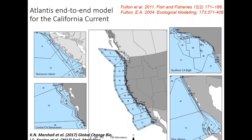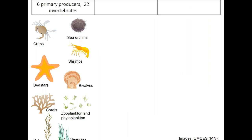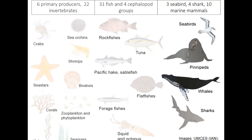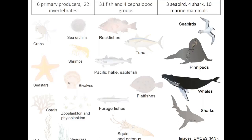This Atlantis model was implemented in papers last year by Kristin Marshall and myself. The geographic domain covers the coast with fairly high resolution near the coast and coarser resolution offshore, extending to the 200 nautical mile limit of the EEZ. The Atlantis framework is a very flexible code base from Beth Fulton at CSIRO in Australia. This end-to-end model includes the full food web — primary producers and invertebrates, fish and cephalopods, seabirds, sharks, and marine mammals — to consider scenarios with direct impacts on invertebrates and see how those play through the food web.